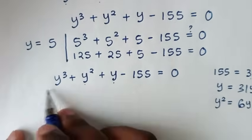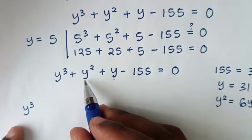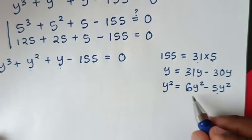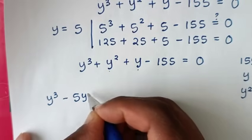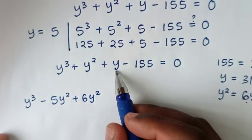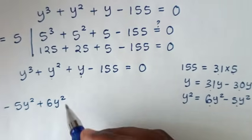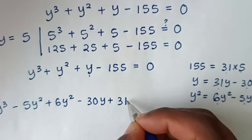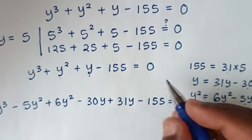By grouping and factorization, from our problem which is y power of 3 plus y squared, we start with negative 5y squared, then plus 6y squared, then plus y — here we start with minus 30y, then plus 31y — so it is y power of 3 minus 5y squared plus 6y squared plus y minus 30y plus 31y, then minus 155 is equal to 0.